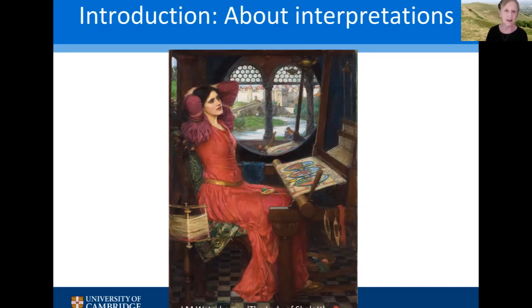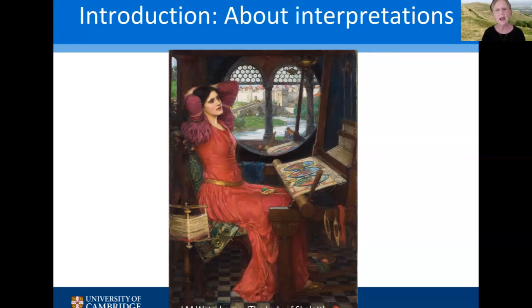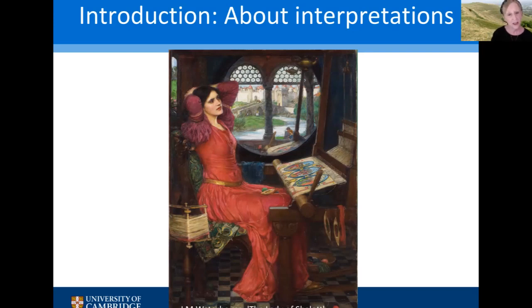Narratives are important because they help us work through problems we can see in dealing with the evidence. The problem comes when we start to believe that the narrative is a universal truth. And that's what the story about people arriving in this country around 400 from Northwest Europe has become — a kind of universal truth that one isn't really supposed to challenge. That's the question I want to examine. I want to look at the assumptions underneath that story.